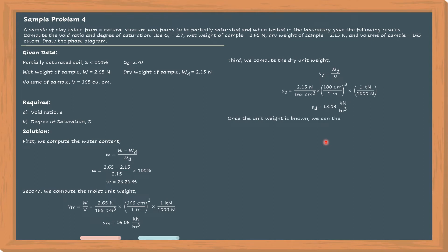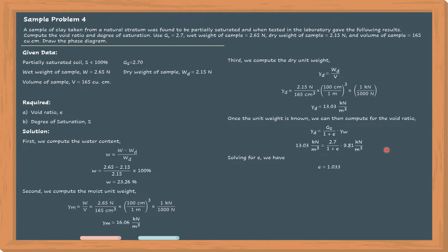Once the unit weight is known, we can compute for the void ratio. The formula we will be using is: dry unit weight equals G sub S over (1 plus E) times the unit weight of water. Substituting the known information, the void ratio is equal to 1.033.